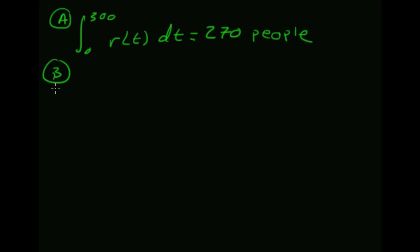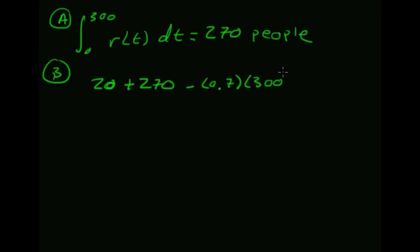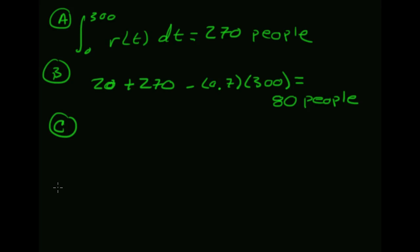Part b: during this interval there are always people in line. How many people are at time 300? We're starting with 20 people. In the first 300 seconds we've added 270, and then we're taking away 0.7 of a person every second for 300 seconds. Simplifying this expression gives 80 people in line at time 300.